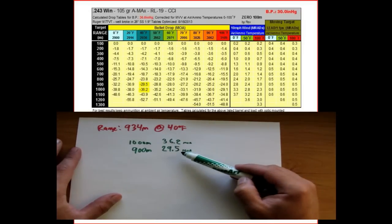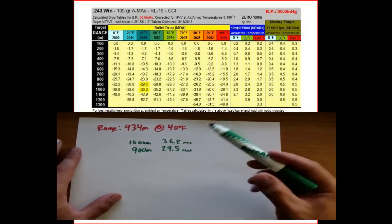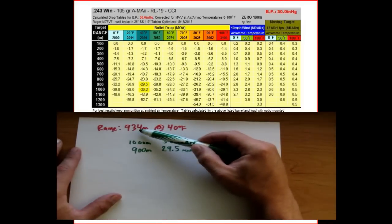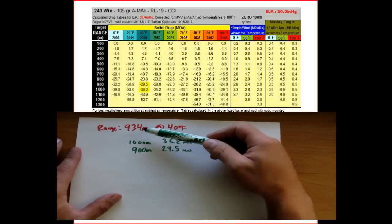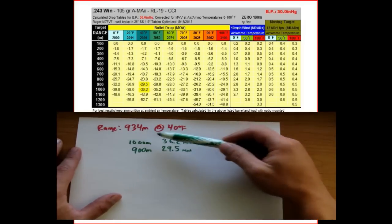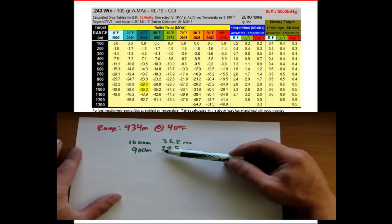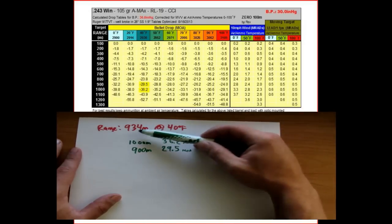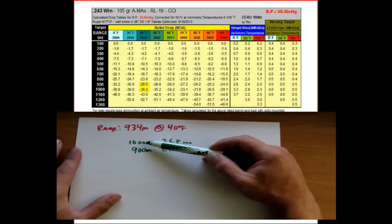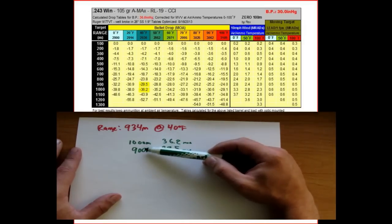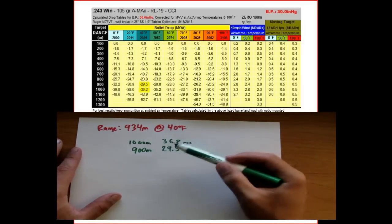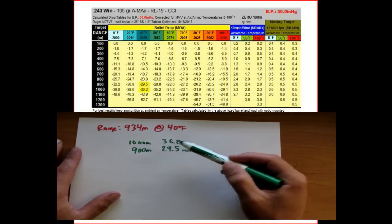You can do it in your mind to get pretty close just by thinking about it. The 934-meter drop data is going to be a little bit closer to the 900 value than it will be to the 1,000 value, because 934 is closer to 900 than it is to 1,000. So what we're going to do is mathematically interpolate.